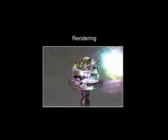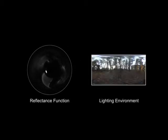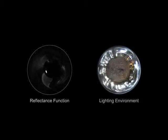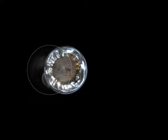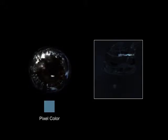We demonstrate the rendering process with data from a glass sculpture of a snail. To render an image, we first take a lighting environment and transform it into the same geometric mapping as the reflectance function data. We then compute the dot product of the two images, which corresponds to the color of a virtual camera pixel. We then repeat the process for all reflectance functions, each one producing a pixel value in our final image.